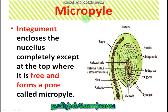Next one is the micropyle. The integument is not continuous at one place — it has a pore or opening that is called as micropyle, through which the pollen tube enters into the ovule.